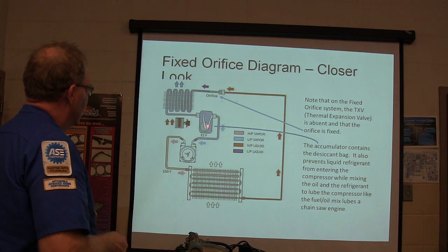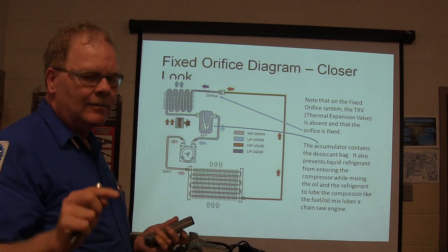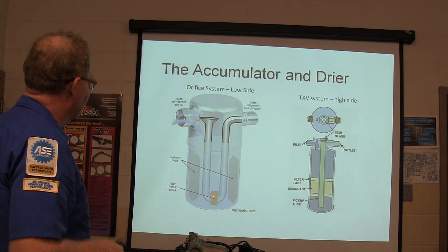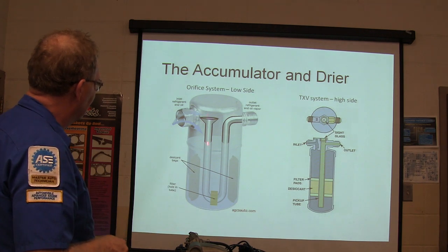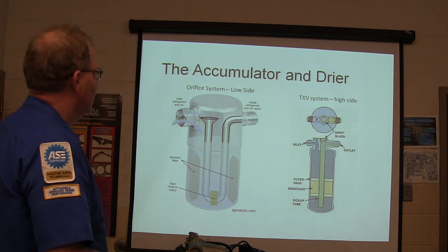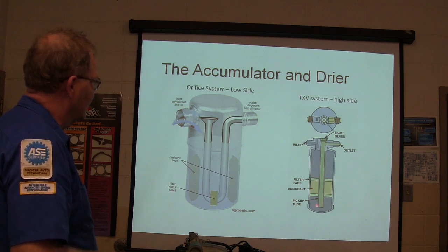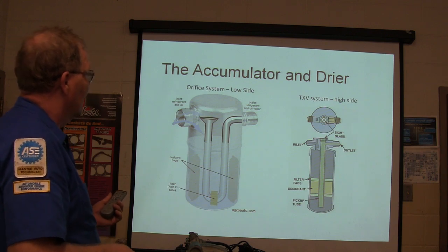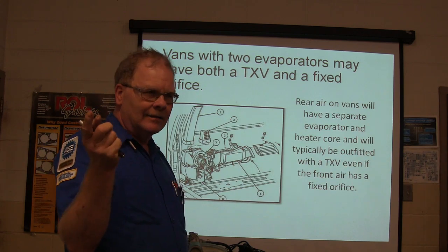The oil and refrigerant has to be pulled through that hole. The refrigerant oil has to be a kind of oil that mixes with the refrigerant. If you put the wrong oil in there, you'll burn it out. The desiccant is usually the little pellets in a pill bottle — do not eat them. It keeps it dry.